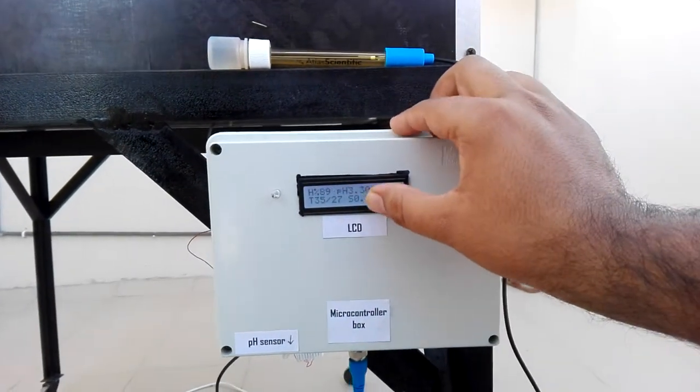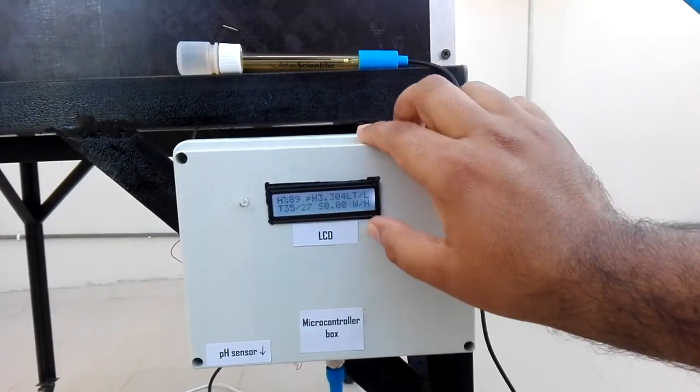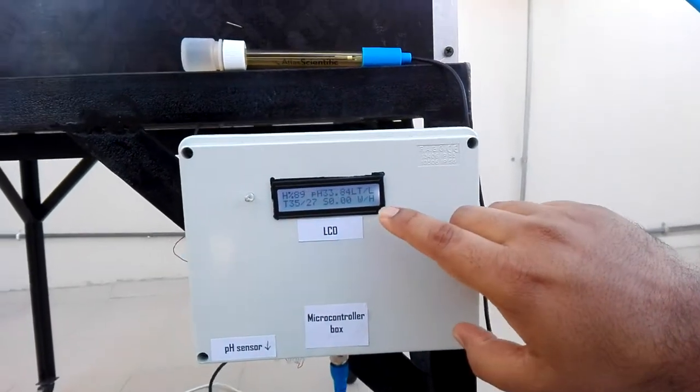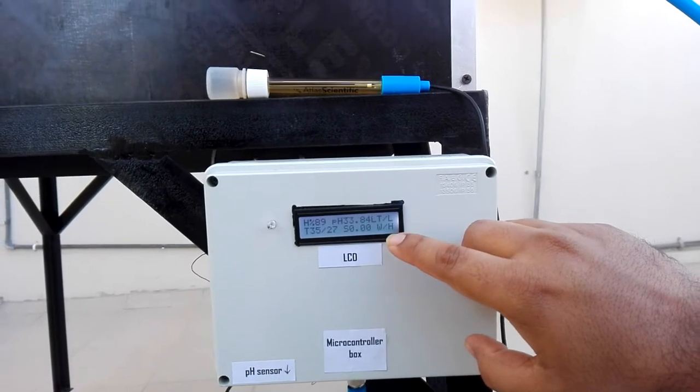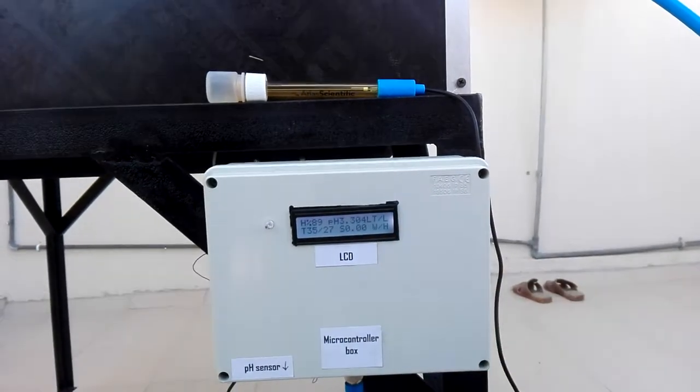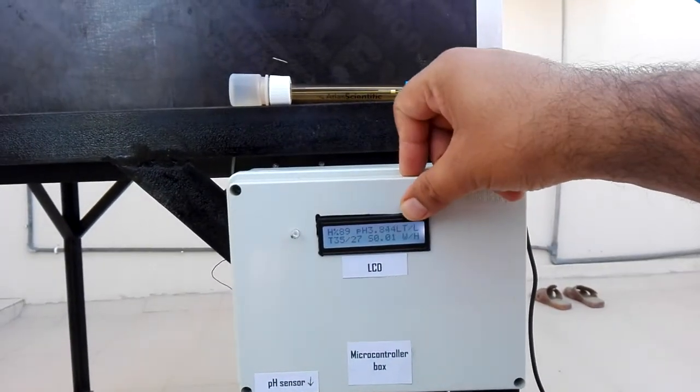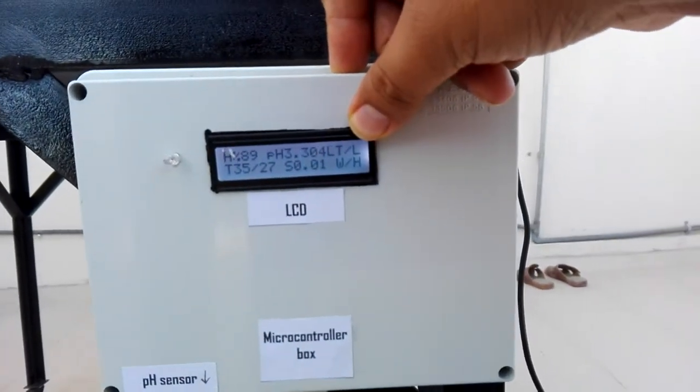We have a wind speed meter here. At the moment there is no wind so it is showing 0.0. We have this water level which is at the moment high, and this on the top is basically light intensity which is at the moment low.